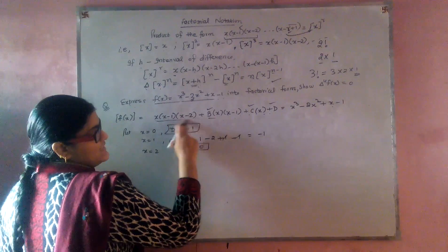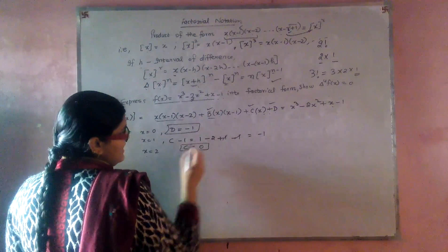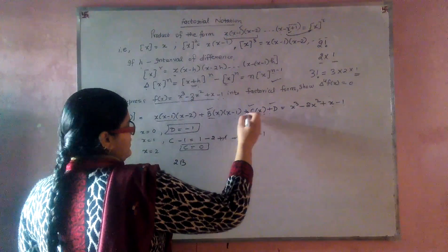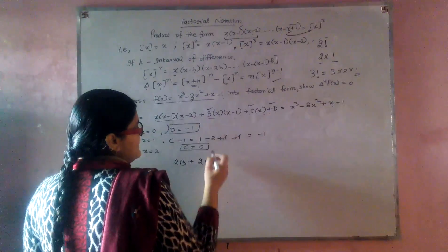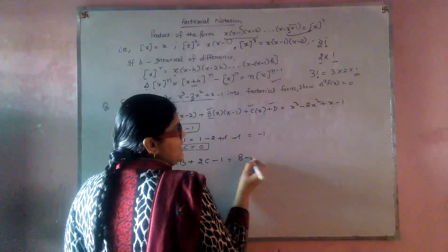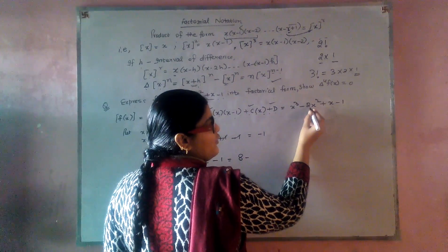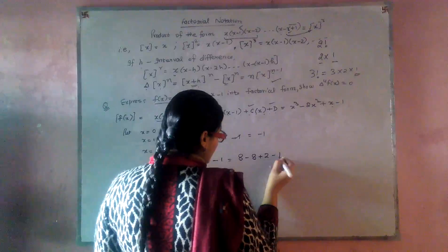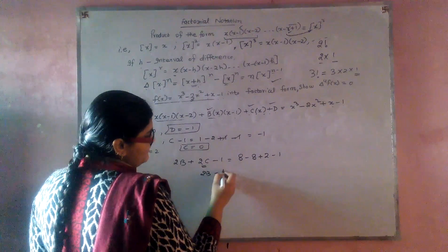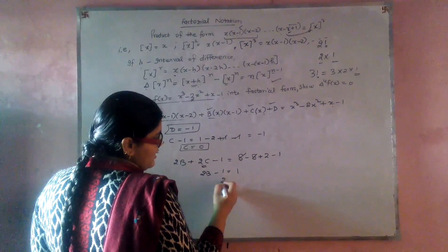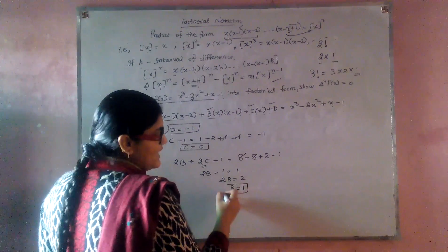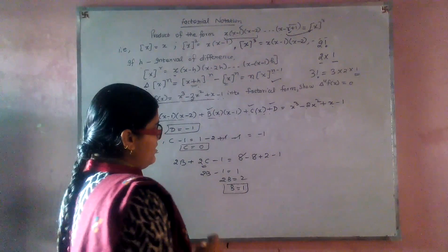Substituting x = 2: this leads to 0. This becomes 2(2 minus 1) = 2, giving 2b plus 2c plus d = minus 1. On the right side, 2 cubed is 8, minus 2 squared is 4, plus 2 minus 1 gives 1. The value of c is 0, so 2b minus 1 = 1, thus 2b = 2, and b = 1.